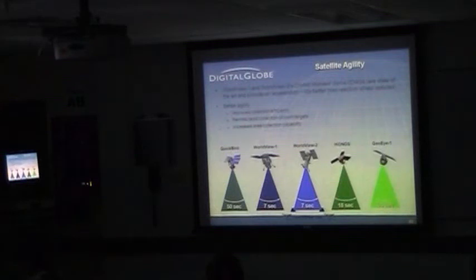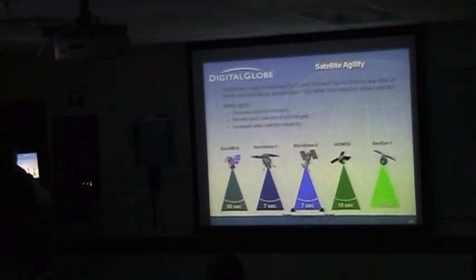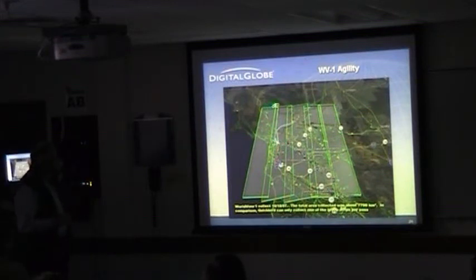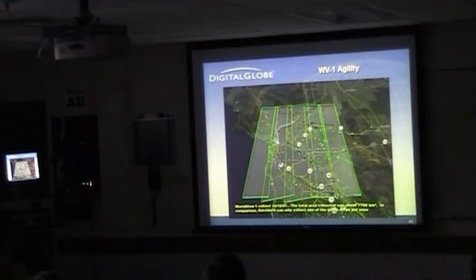I've talked about agility. QuickBird took 50 seconds to scan from one target to another 200 kilometers apart; WorldView satellites take seven seconds. These satellites are quite quick in terms of maneuvering, giving us the ability to cover very large areas. This is San Francisco Bay and surrounding territory — WorldView 1 could scan this way, scan right back by reversing the CCDs, and cover very large areas. We could probably cover an area almost twice as large as this with an individual satellite pass.